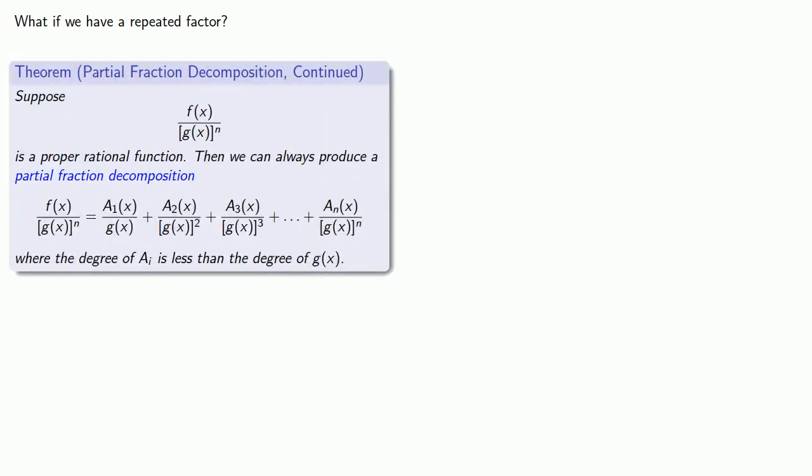So suppose my rational function looks like a polynomial over the nth power of some polynomial, and further suppose it's a proper rational function. Then we can always produce a partial fraction decomposition where our denominators are going to be the powers of our repeated factor, and each numerator is a polynomial whose degree is less than the degree of our repeated factor.